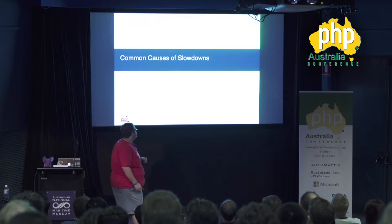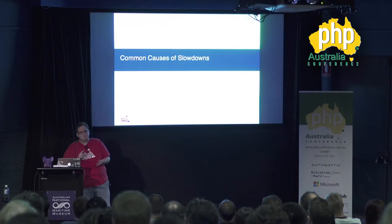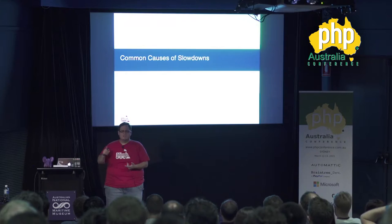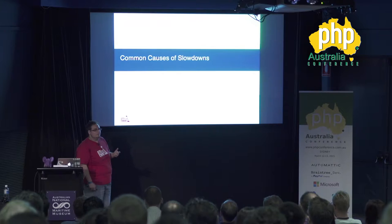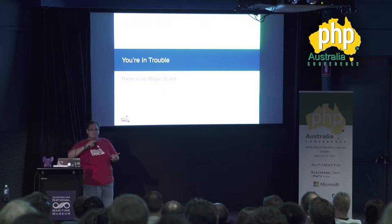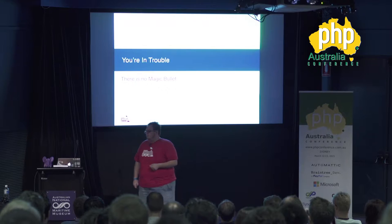Common causes of slowdowns. Number one: databases — doesn't matter if it's Postgres, MySQL, Oracle, Mongo, CouchDB, or SQL Server. Number two: external resources — basically anything else that's not a database: APIs, file systems, sockets, external processes. And number three, which we're going to look at today, is bad code. I like to say the only great code is code that never has to run, and if it never has to run, you should delete it. If you've fixed your database and I/O problems, there is no magic bullet.